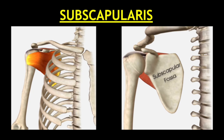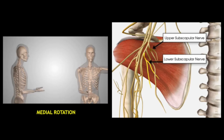Now comes the anterior muscle — subscapularis. It is the strongest muscle, originating from a depression in the anterior surface of the scapula called the subscapular fossa, traversing underneath the coracoid process and attaching to the lesser tuberosity. Its main action is internal rotation or medial rotation. The nerve supply is the subscapular nerve, which has two branches — the upper and lower — from the posterior cord of the brachial plexus.